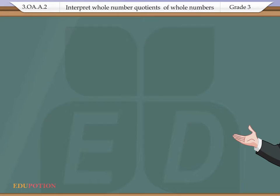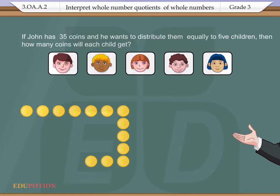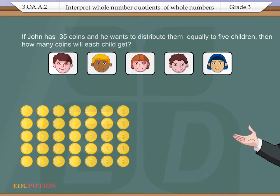Let us take a real-life example. If John has 35 coins and he wants to distribute them equally to 5 children,